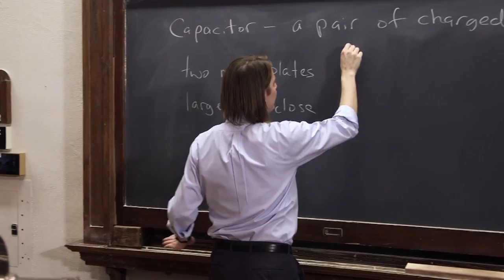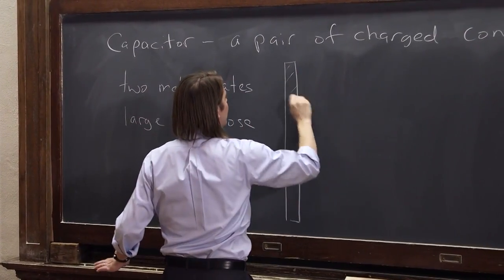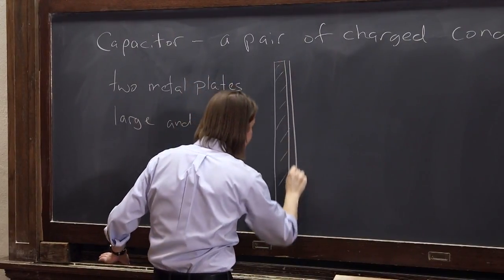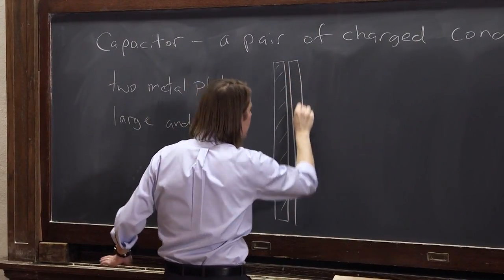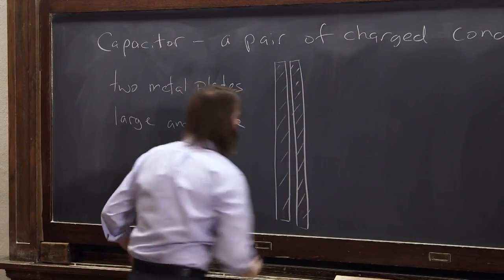Let's go ahead and draw them. So one metal plate is here, like this. And it's a metal. I'll shade it in. And the other one is very close to it, like that.